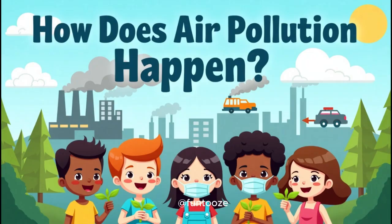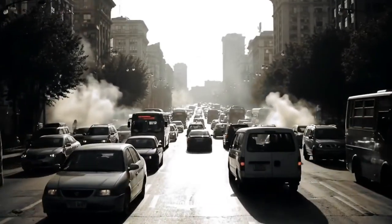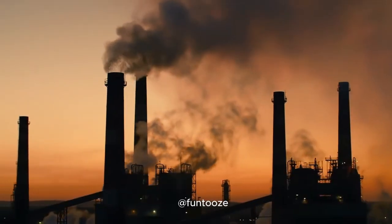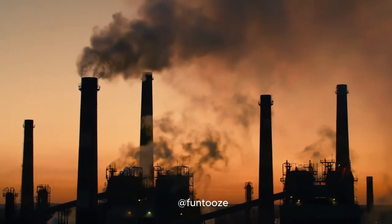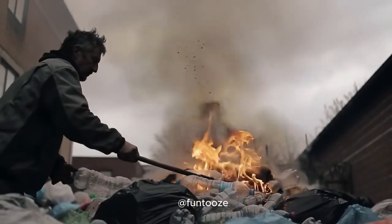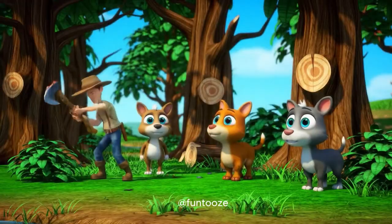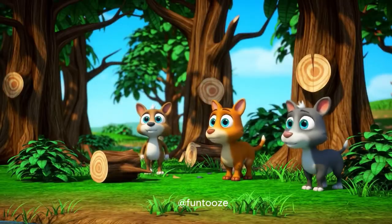How does air pollution happen? Air pollution can happen when cars, buses, and trucks give out smoke, factories release dirty gases into the sky, people burn garbage and plastic, and cutting down too many trees makes the air less clean.